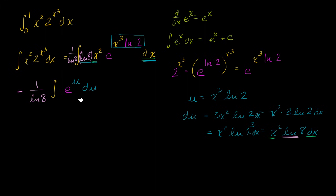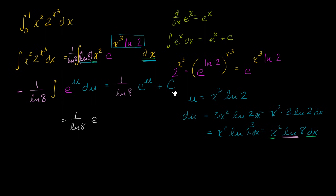And this is straightforward — we know what this is going to be. This is going to equal one over the natural log of eight times e to the u, plus a constant. Then we just reverse the substitution. We already know that u is x to the third times the natural log of two, so the antiderivative of the original expression is one over the natural log of eight times e to the x to the third times the natural log of two, plus c.